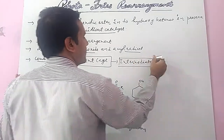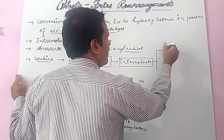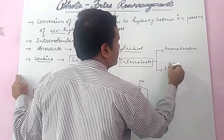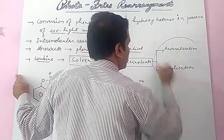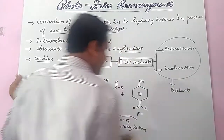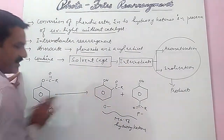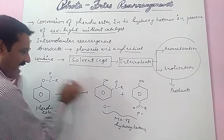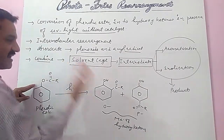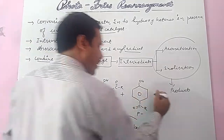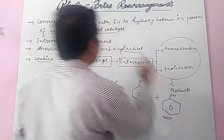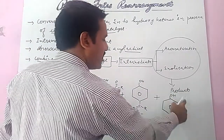This intermediate further proceeds by two processes — either by aromatization or by enolization — and converts into product. When we remove catalyst and heat and use UV light instead, the phenolic ester absorbs light, converts into an excited state, and then forms a phenoxide radical and an acyl radical. This gives ortho and para products, and also a third product — phenol. So in Photo-Fries rearrangement, ortho, para, and phenol are all formed.